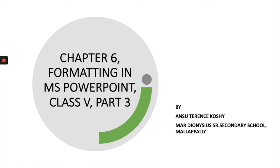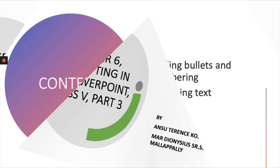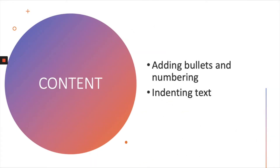Welcome back children. Once again, this time we'll be seeing the third part of Chapter 6: Formatting in MS PowerPoint. Today we'll be discussing two things: adding bullets and numbering, and indenting text.